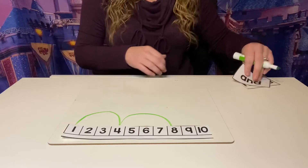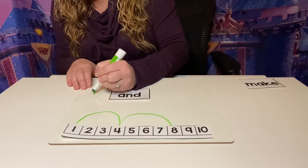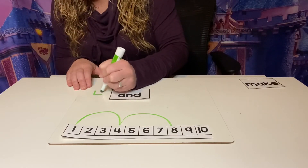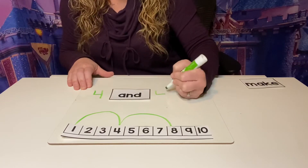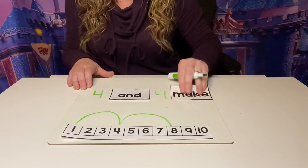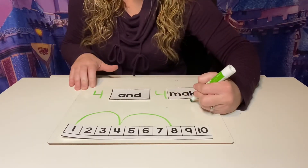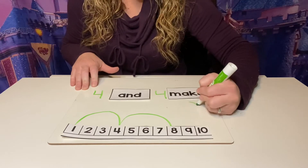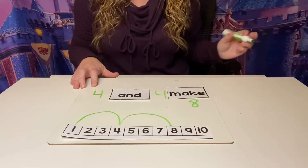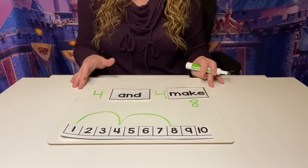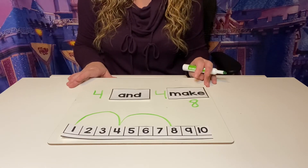So, let's write: four and four make eight. Make an S, but do not stop — go back up. It's an eight at the top. Four and four make eight. Good job.